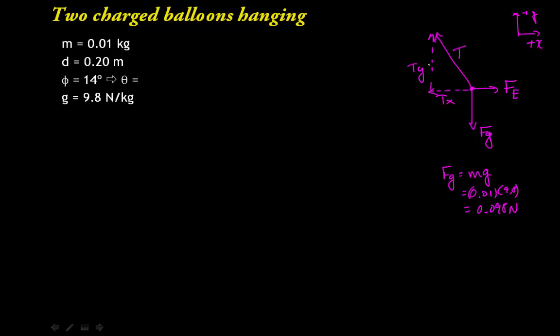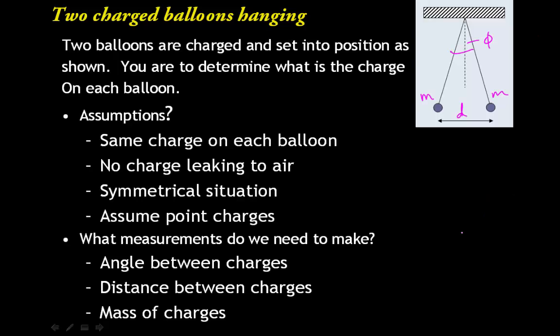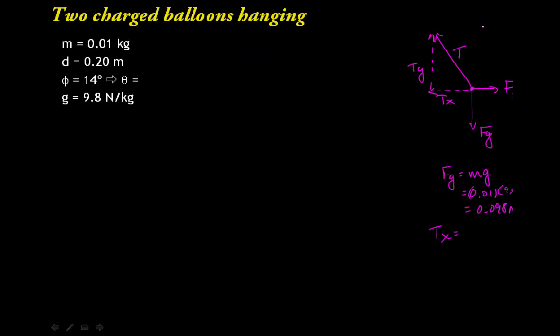And we can write down the relationship between the two components of tension and the tension itself. So Tx is going to, we'll actually need an angle. And we think about our previous drawing. This angle phi, if this is symmetrical, each of these angles at the top are angles that we're dealing with in our new situation. So we're really going to say the angle theta that we're using is actually half of our angle between the two balloons. So that's going to be about seven degrees.